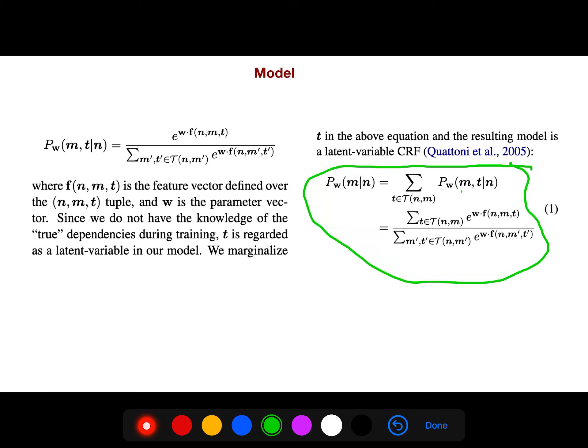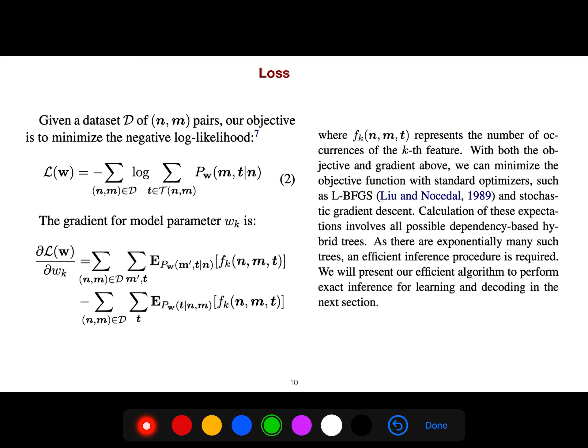We can say what is the probability of meaning and a tree conditioned on your utterance and sentence. Your loss is just the negative log-likelihood of the probability of the meaning and the tree conditioned on your utterance, and you sum over all your training data. So this is your loss. You take the derivative with respect to your parameters that you are learning.